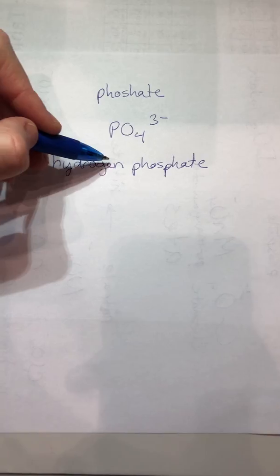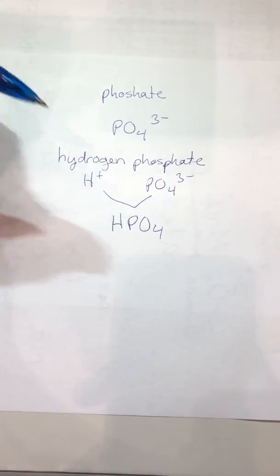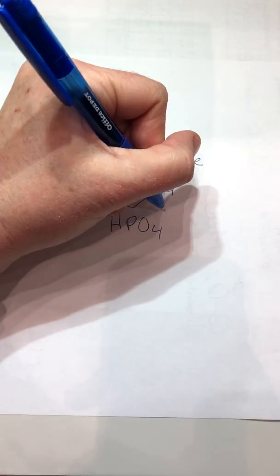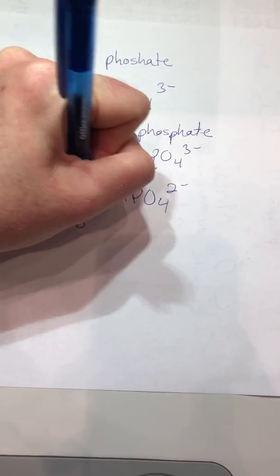But if we want to make it hydrogen phosphate, essentially what we're doing is we're going to add an H+ to this phosphate. So it's going to be H+ and a phosphate, which will combine and be HPO4. But now a plus charge and three minus charge will become a two minus charge.